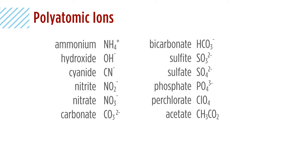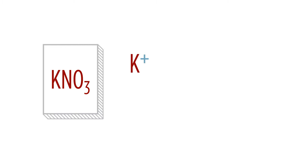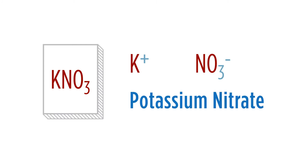When we have a simple compound with a polyatomic, like KNO3, notice that the polyatomic is written together. We know that the potassium ion combines with the nitrate, so we get potassium nitrate.